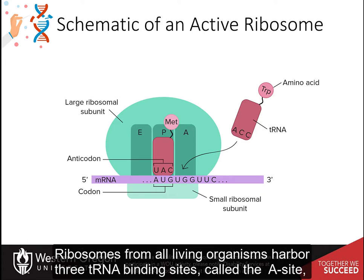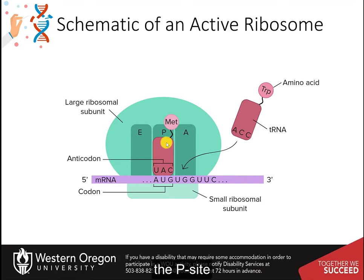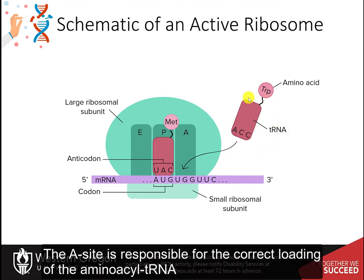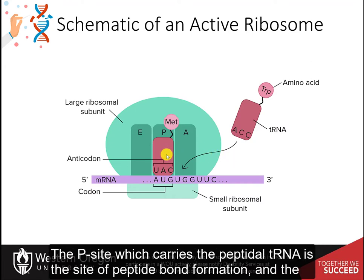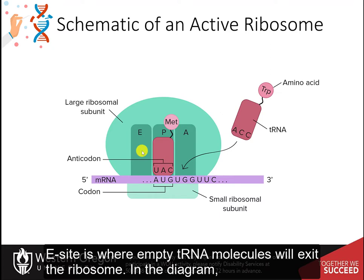Ribosomes from all living organisms harbor three tRNA binding sites called the A site, the P site, and the E site. The A site is responsible for the correct loading of the aminoacyl tRNA. The P site, which carries the peptidyl tRNA, is the site of peptide bond formation. The E site is where empty tRNA molecules will exit the ribosome.